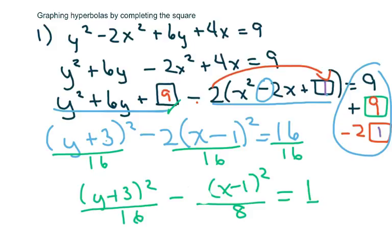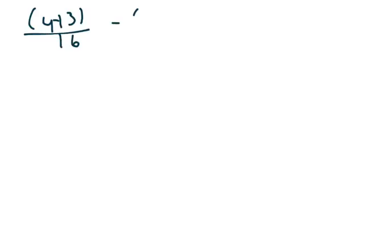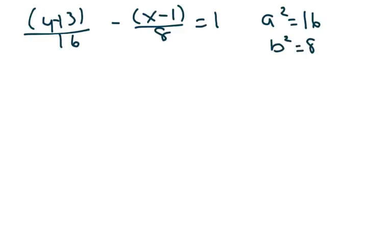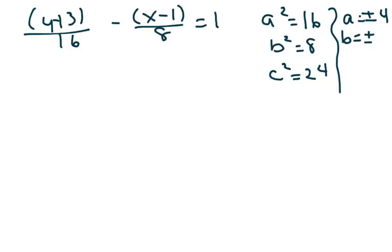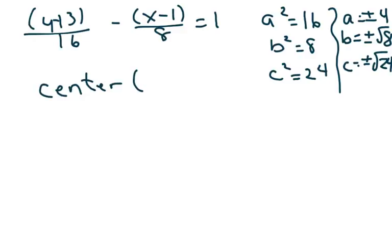So now we have our hyperbola in standard form. Let me write this again: y plus three squared over 16 minus x minus one squared over 8 equals one. My a squared is 16, my b squared is 8, and my c squared is going to be 24. Therefore my a is plus or minus 4, my b equals plus or minus square root of 8, which is really 2 root 2, and c equals plus or minus square root of 24, which is very close to 25.